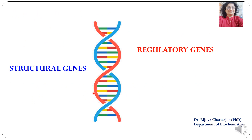Genes are of two types: structural genes and regulatory genes. Structural genes are those that make proteins, whereas regulatory genes are those that regulate the structural genes. Let us look at the arrangement of these regulatory genes.